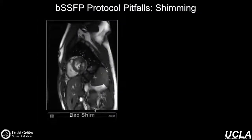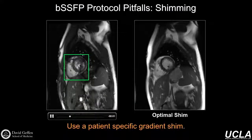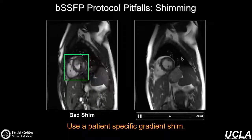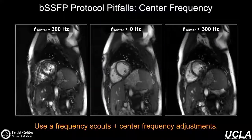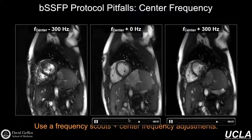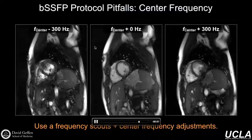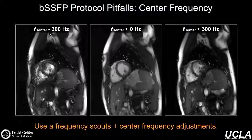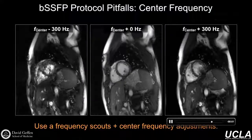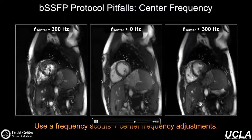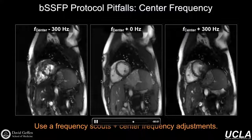Other things to pay attention to are whether you have a good shim. When you have a bad shim, image quality is poor. You can usually place a shim box over the heart to improve overall field homogeneity and get an optimal shim, which improves image quality — especially important for quantitative assessment. Our general guideline is to use a patient-specific gradient shim. It's also important with this sequence to do a center frequency scout, so the center frequency used for RF pulses during excitation is at the correct frequency with very little in the way of flow artifacts or off-resonance artifacts. A center frequency adjustment can bring you back to having nice high-quality images.